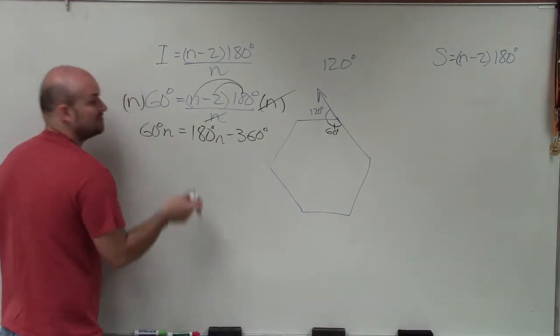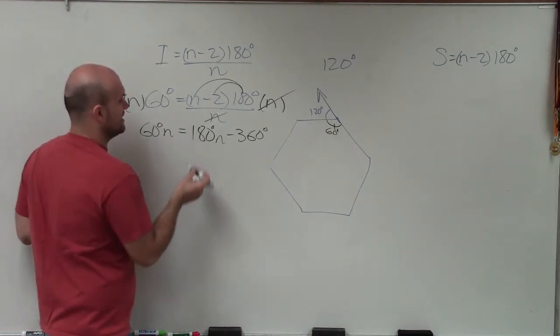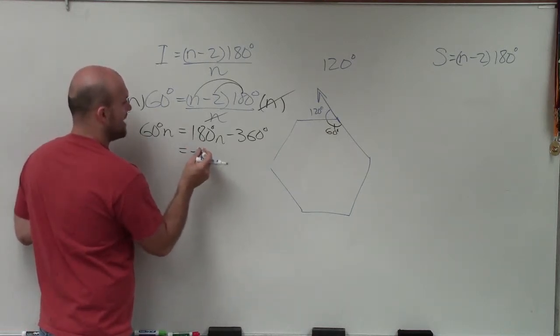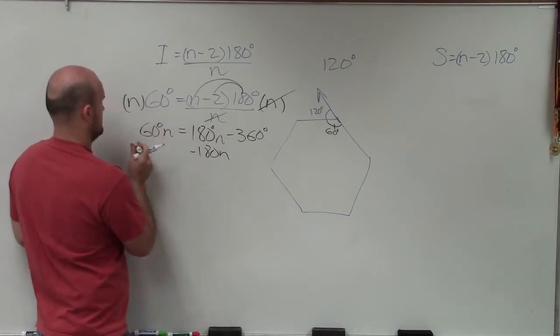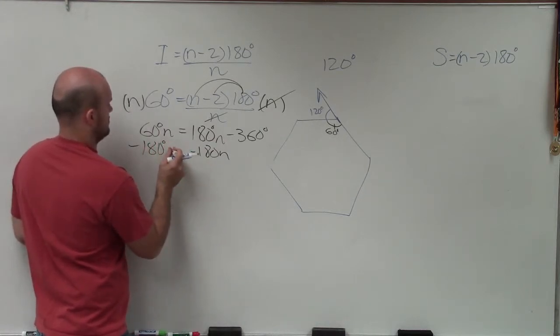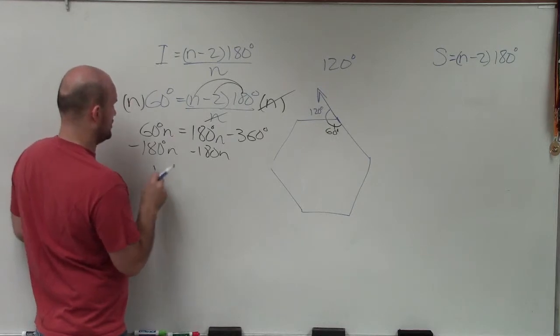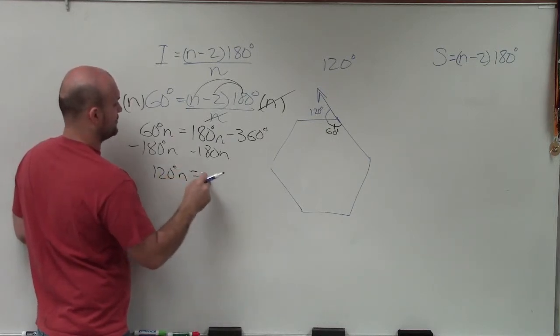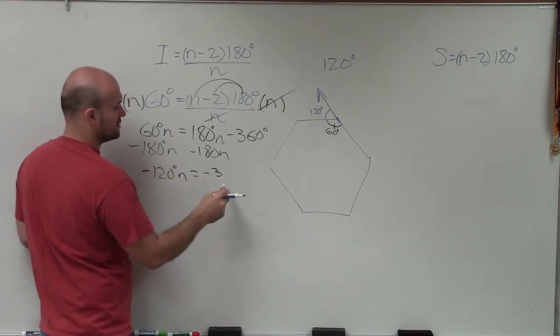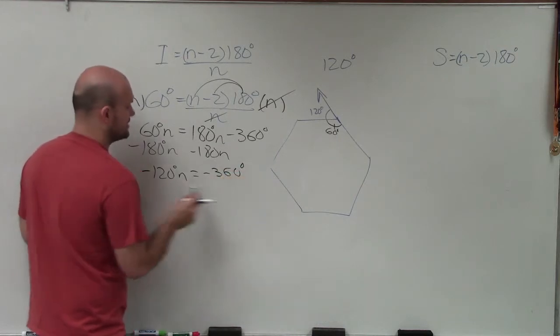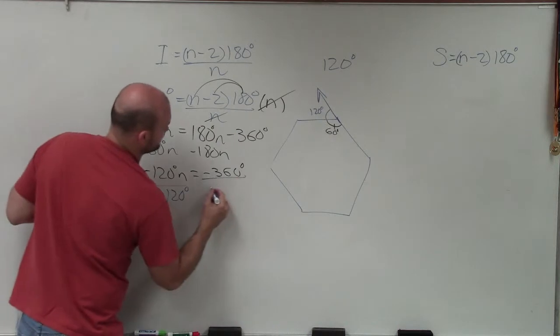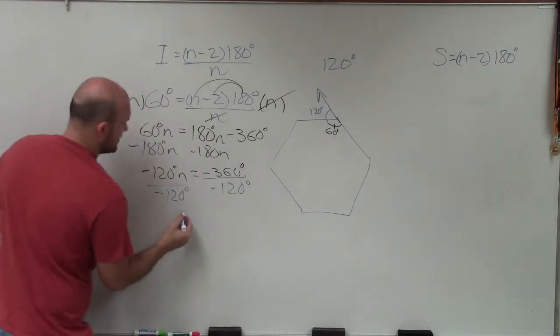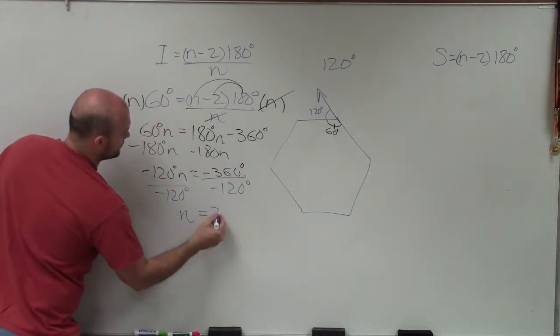I need to get the n's together, right? So I'm going to subtract 180 degrees on both sides. Therefore, I get 120 degrees n equals negative, sorry, negative 100 degrees n equals negative 360 degrees. Now I'll divide by negative 120 degrees. And therefore, my final answer is n equals 3.